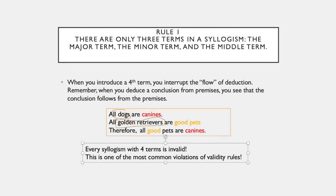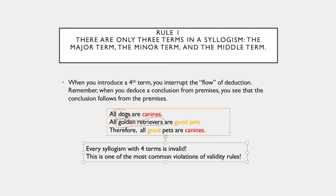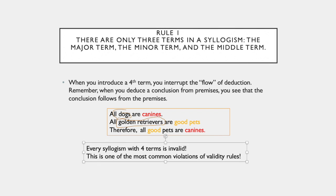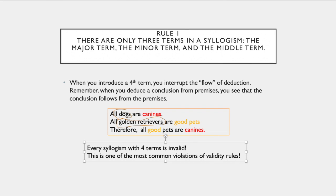In this case, the argument is invalid because it has four terms rather than three. There are two middle terms that are in the premises rather than one. The two middle terms are dogs and golden retrievers.